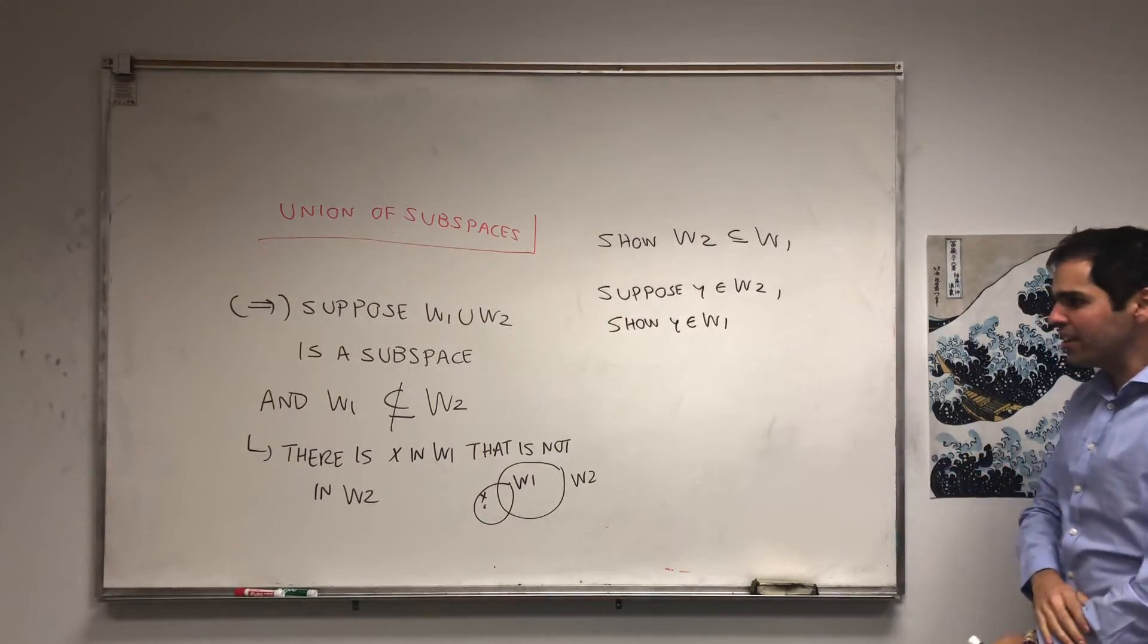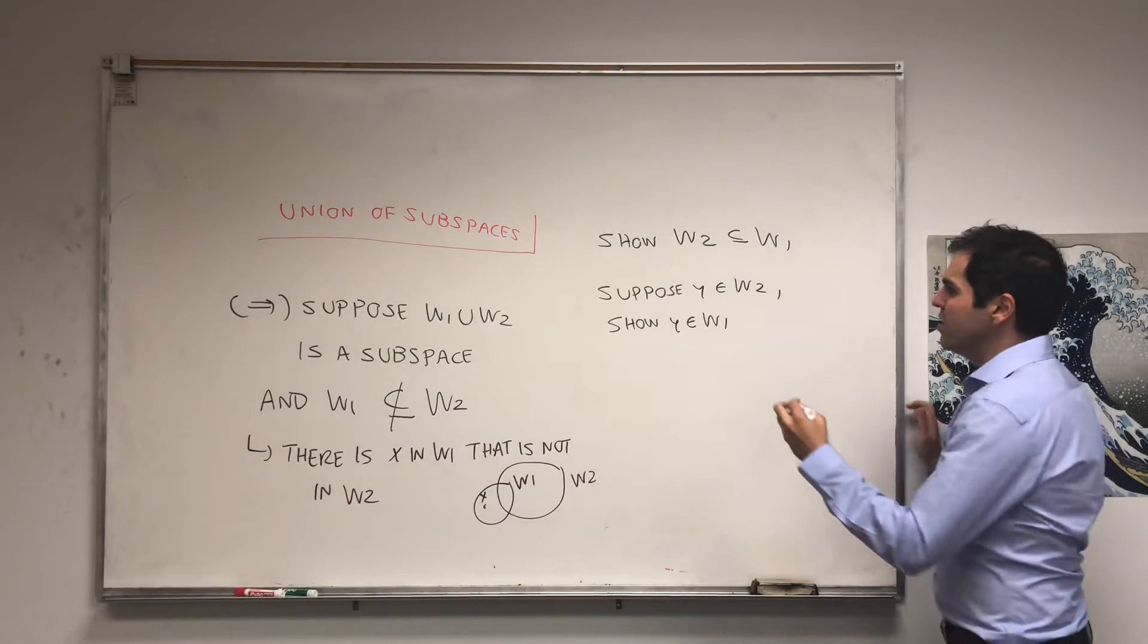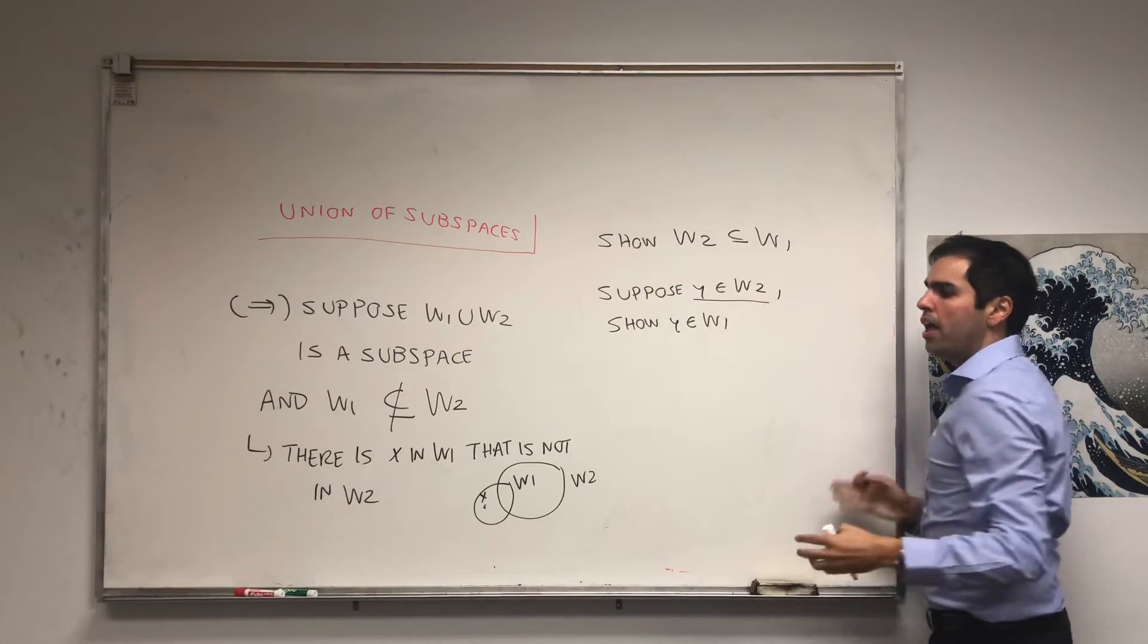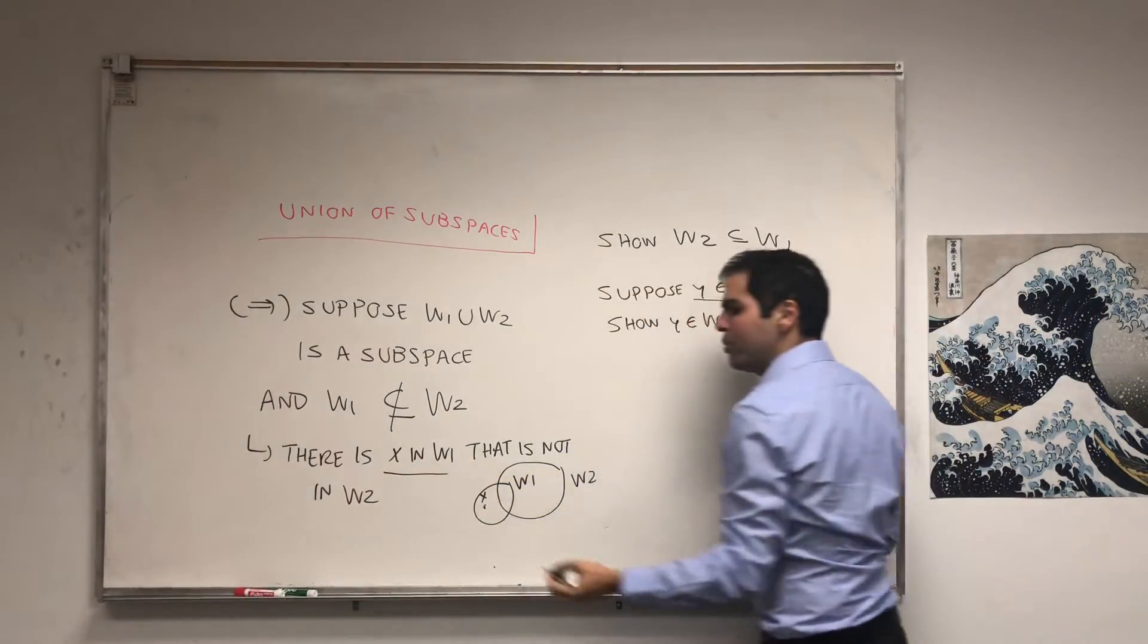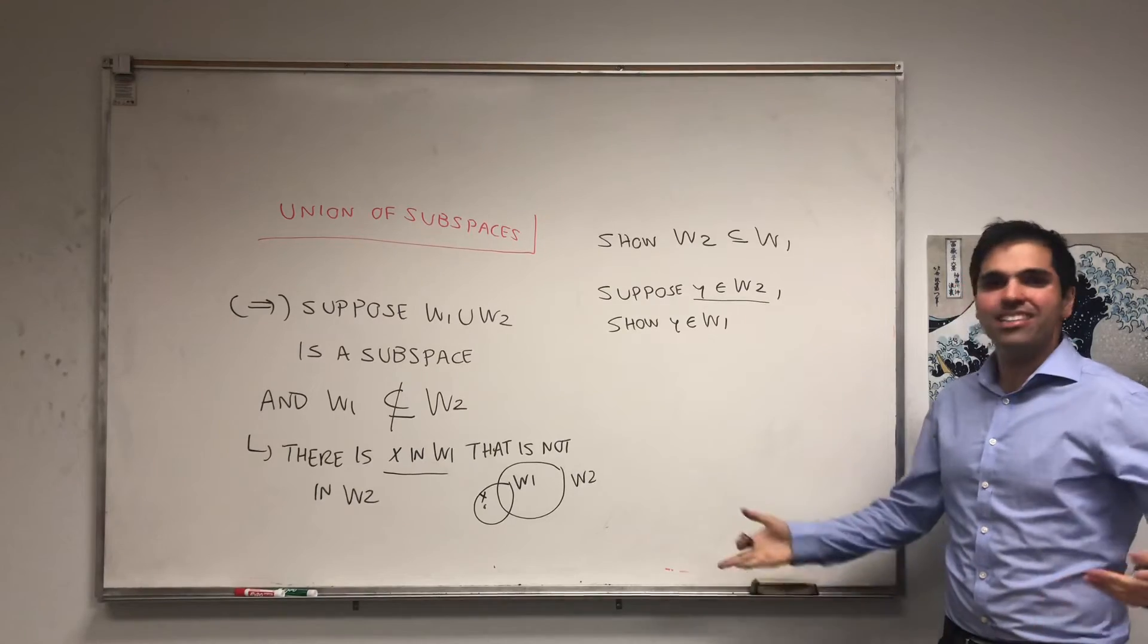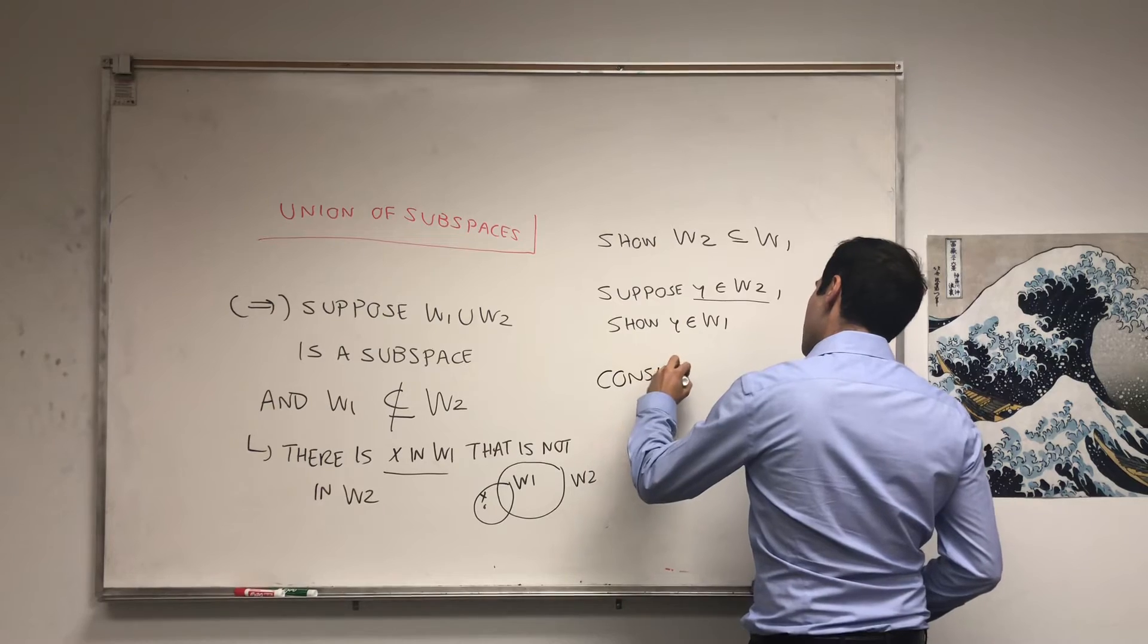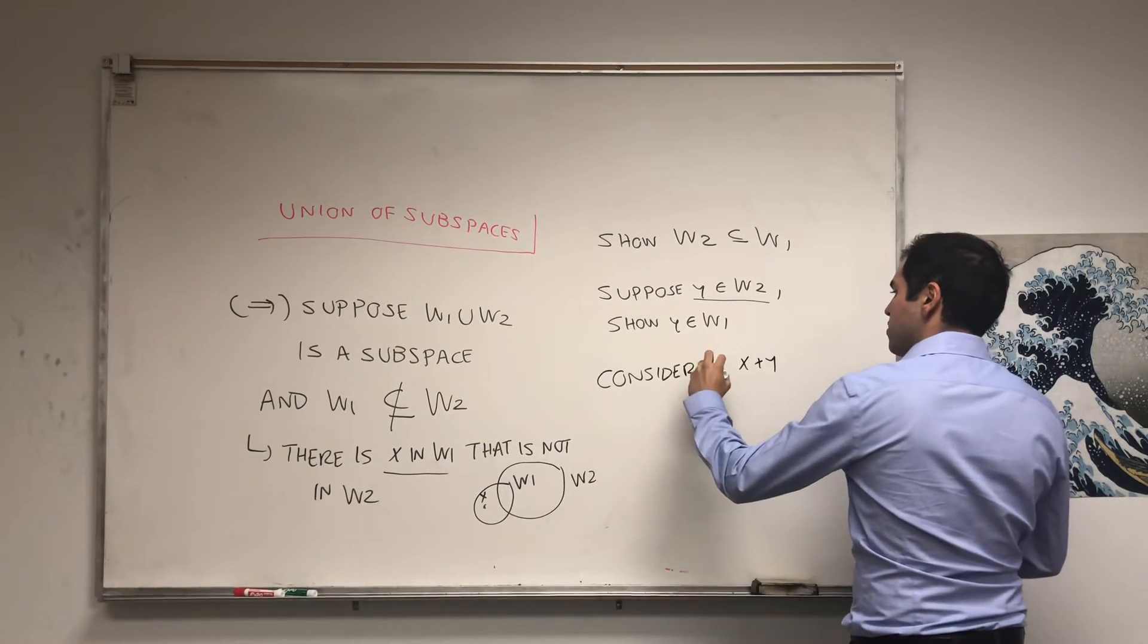Okay, and what we would like to do is use the two pieces of info. So, we know y is in W2. And the only other thing we can use is that x is in W1. So, let's sort of use those two elements and the best way to do it is consider the sum. So, consider x plus y.